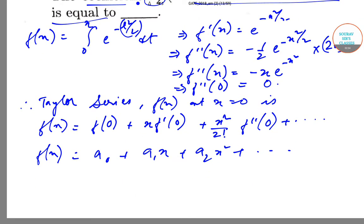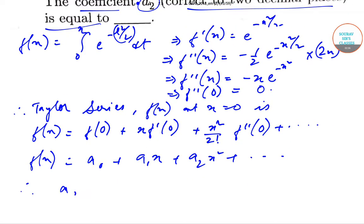By comparison, a₂ = f''(0)/2!. Since f''(0) = 0 and 2! = 2, we get a₂ = 0/2 = 0.